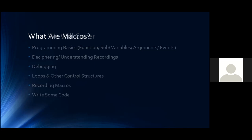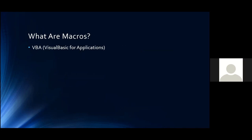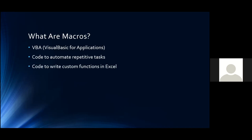So the first question is: what are macros? Macros in Excel are written in a language called VBA, which is Visual Basic for Applications. It's code that you can use to automate repetitive tasks. You can also use it to write custom functions in Excel — for example, a function for converting centigrade to Fahrenheit — and use it like any of the normal built-in functions such as Max or Min.